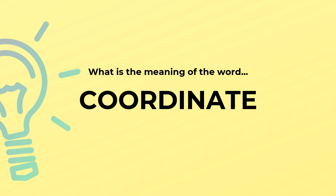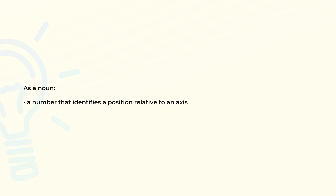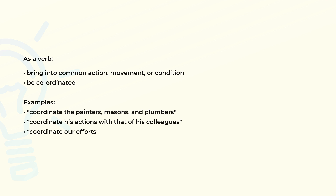What is the meaning of the word coordinate? As a noun, a number that identifies a position relative to an axis. As a verb, bring into common action, movement, or condition.